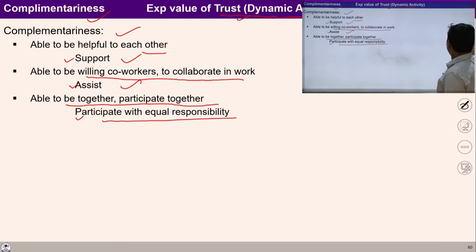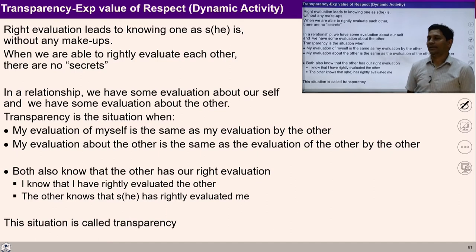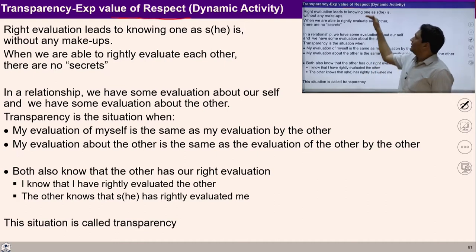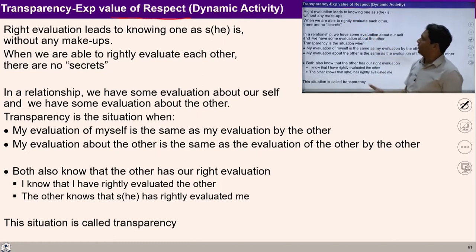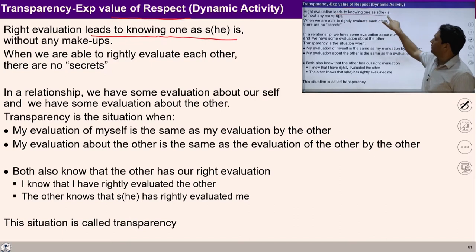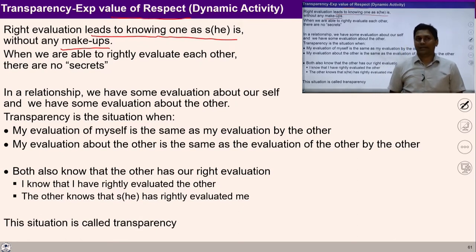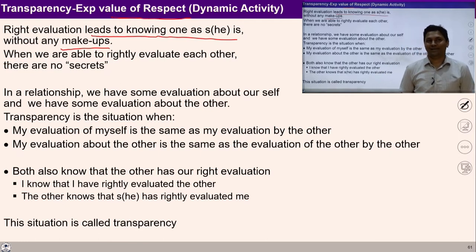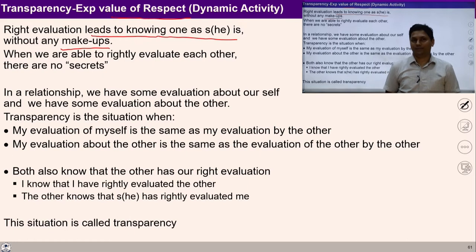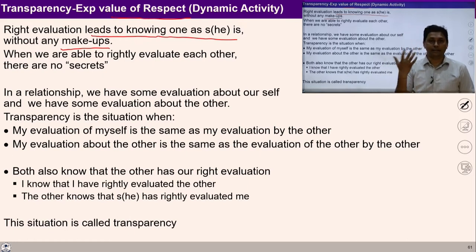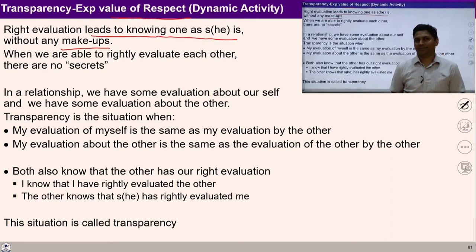Let's move to transparency — recognized as the expressed value of respect. Respect is right evaluation, which leads to knowing one with clarity. When we can rightly evaluate each other, there is no obscurity. In relationship, we make evaluations whenever we are interacting or thinking of any other person. Whenever we evaluate rightly, then this is transparency.